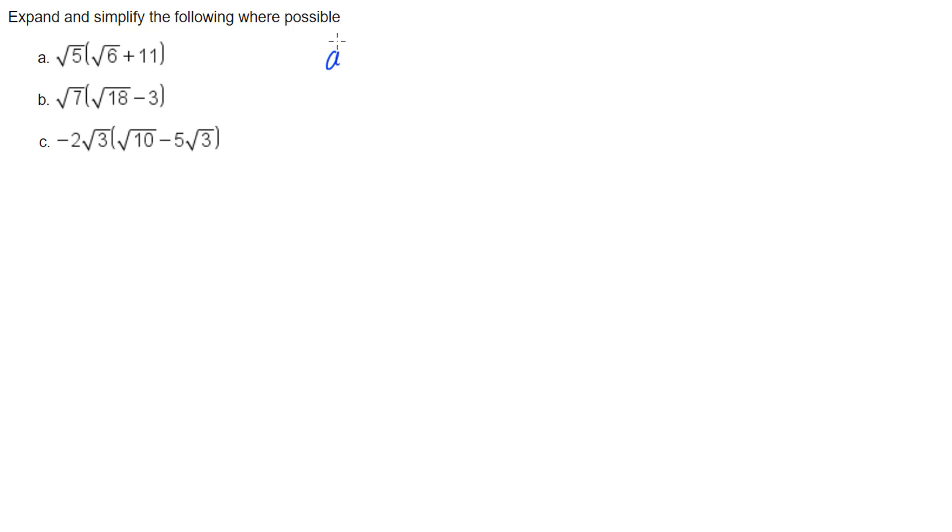Looking at the first one, which is the square root of 5 multiplied by the square root of 6 plus 11. The distributive law says that we multiply the term out the front onto each term inside the brackets individually.